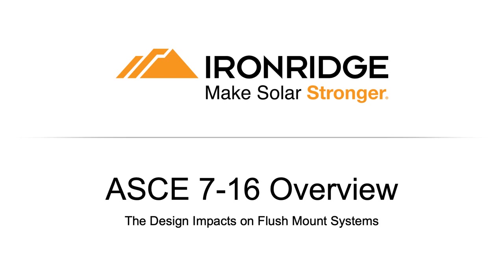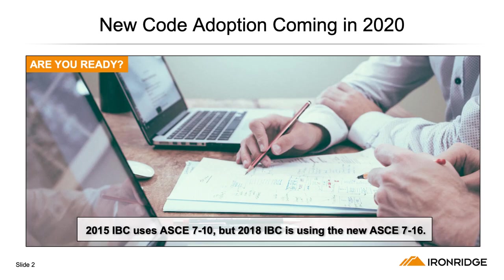Welcome to an overview of the ASCE 716 code changes. Over the course of 2020, municipalities across the U.S. will be adopting the 2018 International Building Code. The old 2015 International Building Code used ASCE 710, the prior version of design guidance for PV systems provided by the American Society of Civil Engineers, as the basis for the design of structures, including seismic, snow, and wind loads.